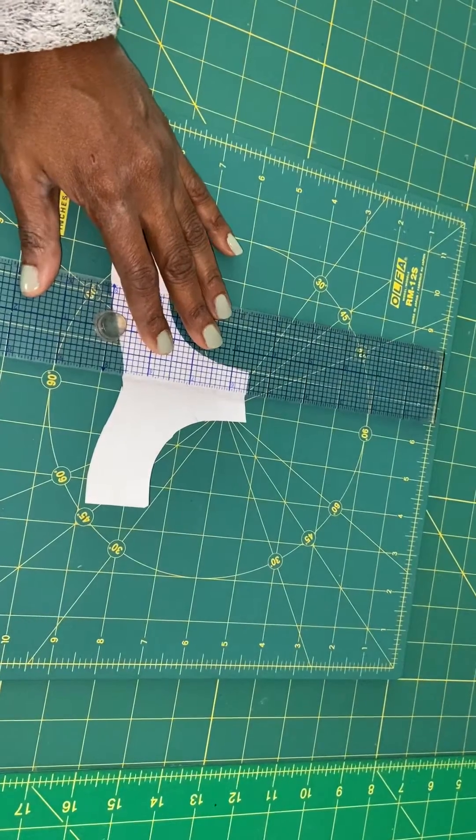And then just cross it over about a quarter inch. Let's do a quarter inch. And you're bringing it in.